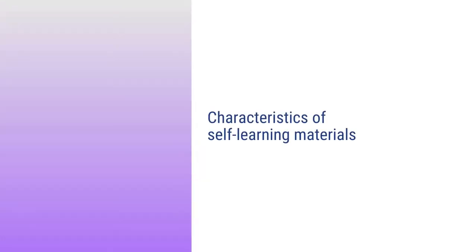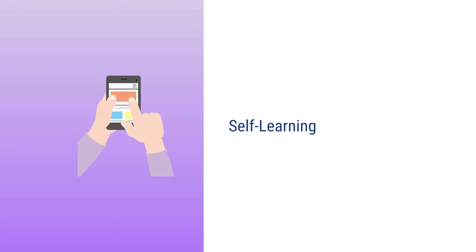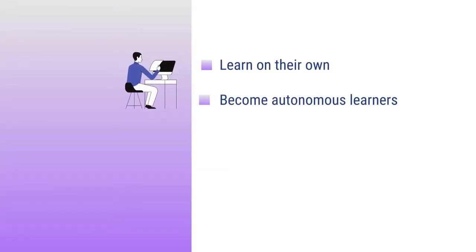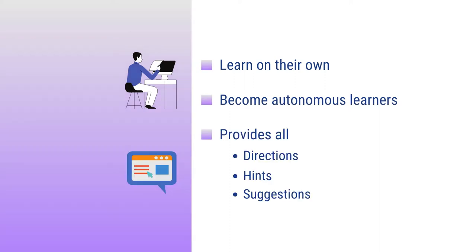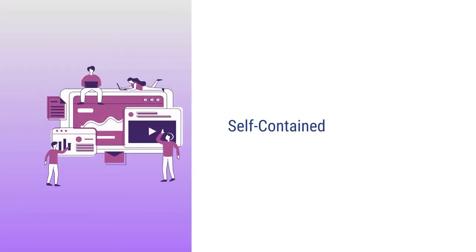Now let us discuss what are the different characteristics which differentiate the self-learning materials from the conventional textbooks. First of all, the self-learning materials, as the term indicates, they are self-learning. They help the learners learn on their own, become autonomous learners, because they provide all directions, all suggestions, all hints from time to time to learn on their own. So they are self-contained, meaning they are self-sufficient. A learner doesn't require to go outside or refer to other sources to understand the concepts or ideas given in the self-learning materials.